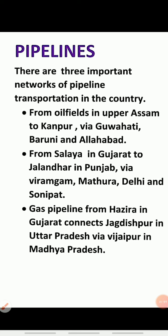The third is a gas pipeline from Hazira in Gujarat connecting Jagdishpur in Uttar Pradesh via Vijaypur in Madhya Pradesh. It has branches to Kota in Rajasthan, Shahjahanpur, Babrala and other places in Uttar Pradesh.